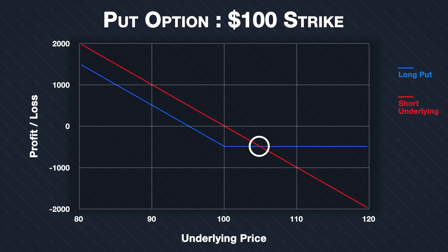It's at this point that the put option would have exactly the same profit or loss as the short position. For any point to the right of this, it would be much more beneficial to have the put option. For any point to the left of this, it is a little more profitable to have shorted the shares, but both gain from all further price decreases.